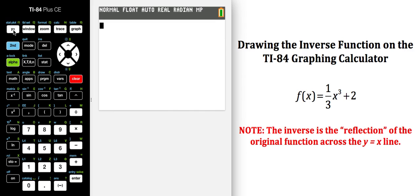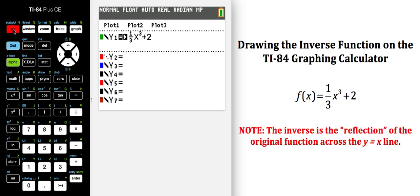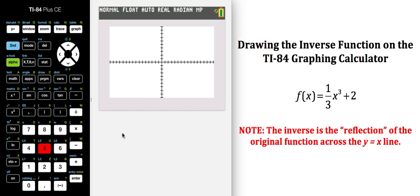So the first thing you would need to do is come over to your graphing calculator and hit the Y equals button and enter that original function, which I have already done here. Then I am going to choose to zoom square and go look at that original function. So the green line there is my original function.